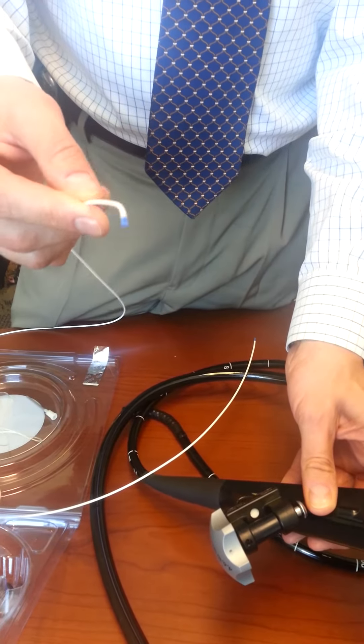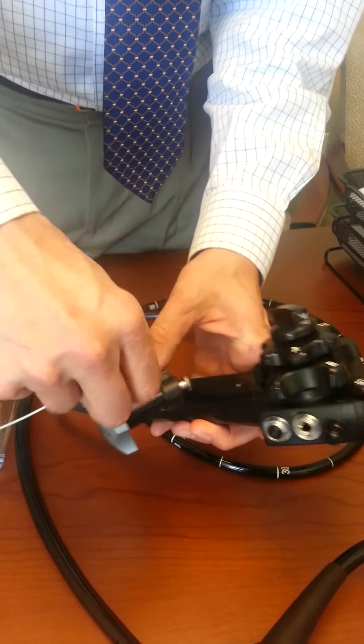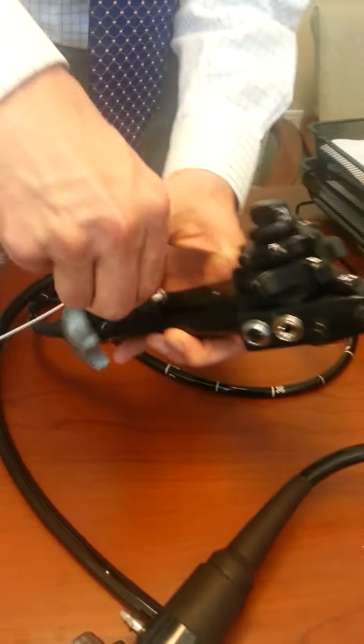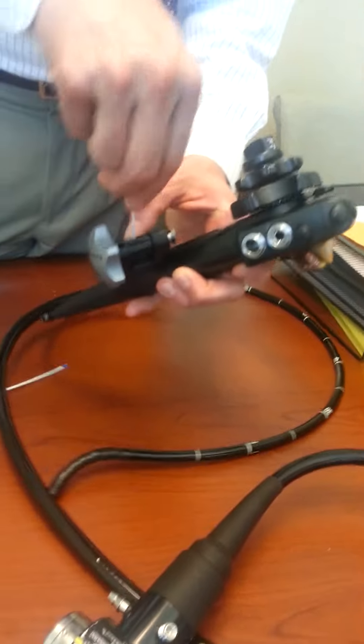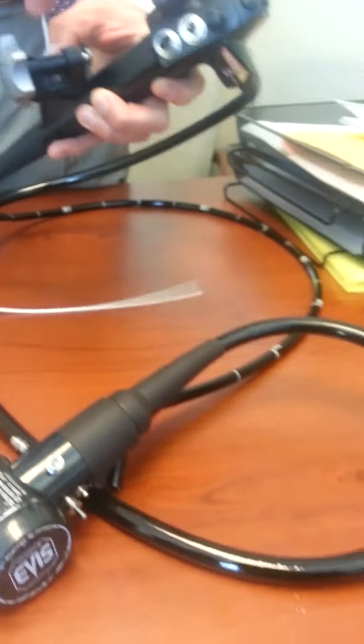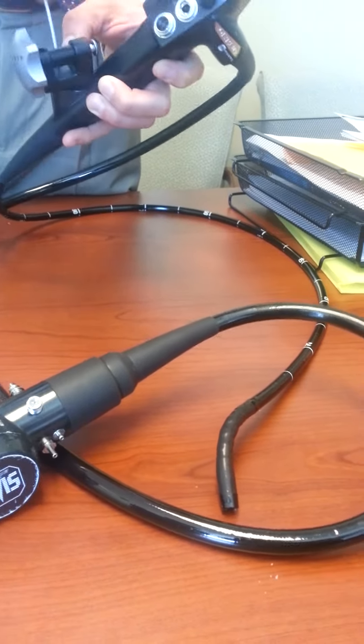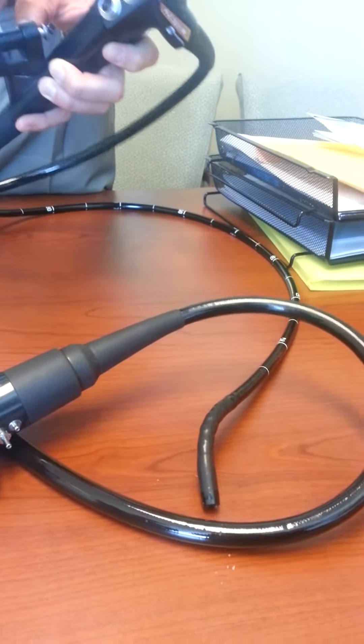Take the white cannula and put it through the diaphragm, all the way through the scope. It's going to come out the end of the scope and will be used to pull the string that holds the bander through the scope.